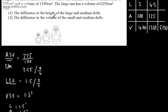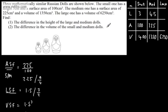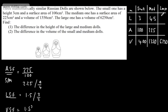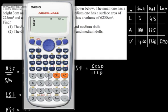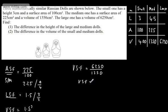That now answers the second part — the difference in volume between small and medium. But we still need the height of the large doll. The volume scale factor between the large and the medium is 6,250 divided by 1,350. Simplifying, that's 625 over 135, which reduces to 125 over 27. So the volume scale factor between the medium and large is 125/27.